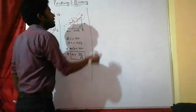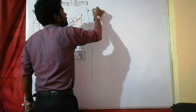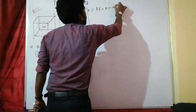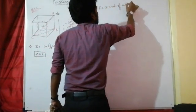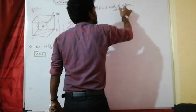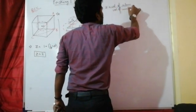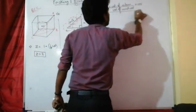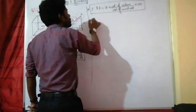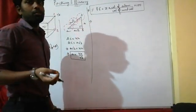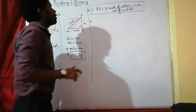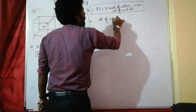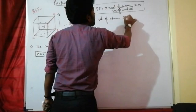Now for packing efficiency. The formula for percentage packing efficiency is: (Z × volume of atom) / (volume of unit cell) × 100. The volume of an atom is (4/3)πR³, and the volume of the unit cell is A³ since the unit cell is cubic in nature.